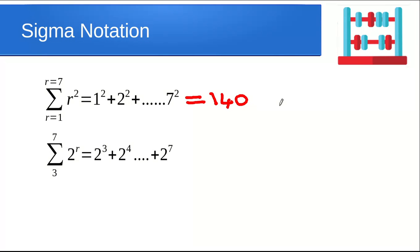Summations don't have to start from 1 — they can start from 3. Notice I haven't written r equals 3 and r equals 7 explicitly; you don't have to, because it's obvious that r is the variable. This time we're not doing r squared — we're going to do 2 to the power of r from 3 to 7. We start by plugging in r equals 3, getting 2 cubed, plus 2 to the power of 4, and so on all the way up to 2 to the power of 7. I believe that equals 248.